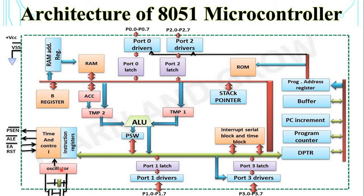The first block is the ALU — Arithmetic Logic Unit. It performs 8-bit arithmetic and logical operations on operands held by temporary registers Temp1 and Temp2, which cannot be accessed by users. The ALU performs operations including addition, subtraction, multiplication, division, increment, decrement, AND, OR, XOR, complement, compare, and rotate instructions using 8-bit words.